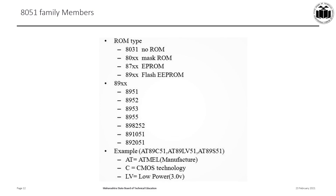The 8051 family members chart shows that depending upon the ROM type, you have the 8031 which has no ROM memory, the 80 series which has mask ROM memory, the 87 series which has EEPROM memory, and the 89 series which has flash EEPROM memory. The 89 series comprises 8951, 8952, 8953, 8955, and further developments include 898252, 891051 and 892051. Examples of the 89 series are AT89C51, AT89LV51, or AT89S51, where AT stands for Atmel, C stands for CMOS technology, and LV stands for low voltage, which can be as low as 3V.